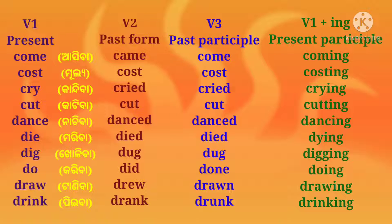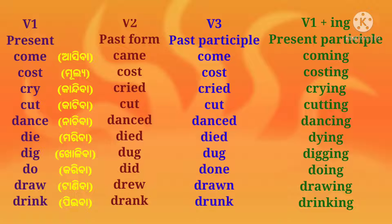Die (moriba): second form — died; third form — died; fourth form — dying. Dig (kholiba): second form — dug; third form — dug; fourth form — digging. Do (koriba): second form — did; third form — done; fourth form — doing.